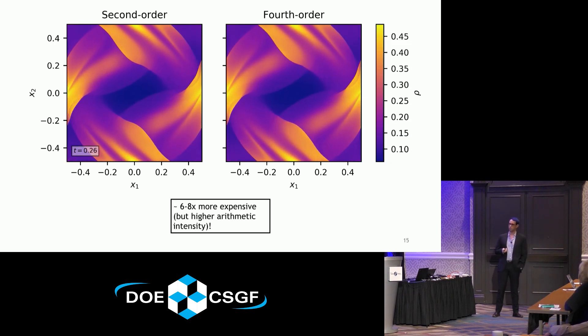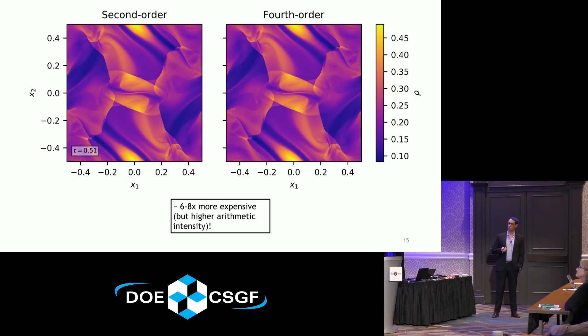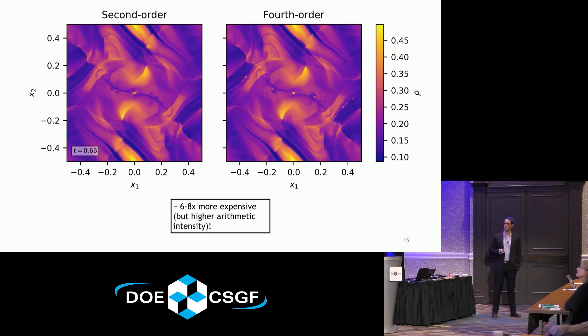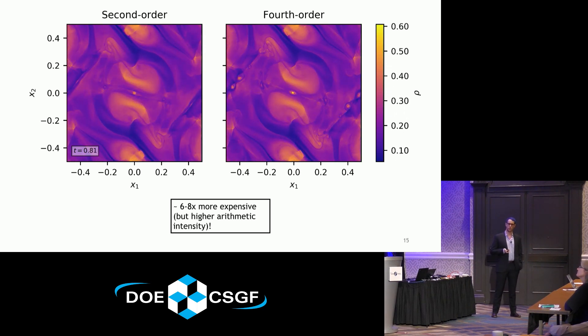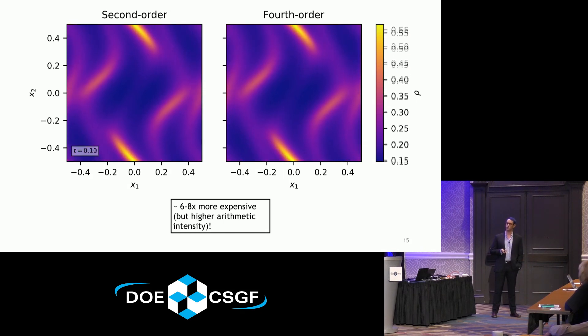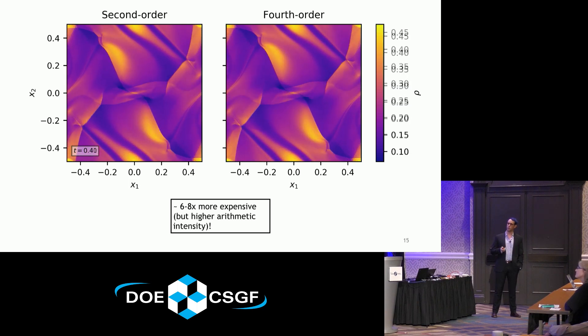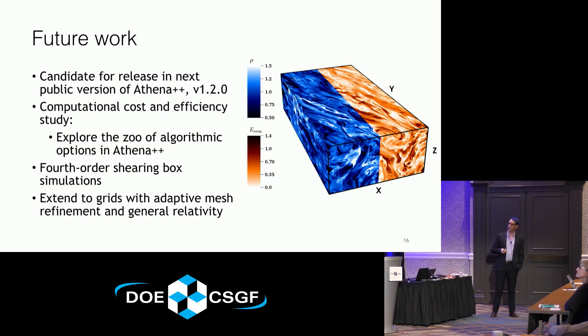After all that optimization, making the second order method fast, currently we're six to eight times more expensive doing the fourth order method for the equivalent problem. But in certain cases, it will definitely be worth it. The arithmetic intensity of the overall method is much higher, which is promising for coming up with optimizations for it and making it truly worth it. We're going to check all the different options that we can run in the code in order to apply it to the shearing box simulations occurring in disks of matter around black holes and extended to other aspects of the code functionality.